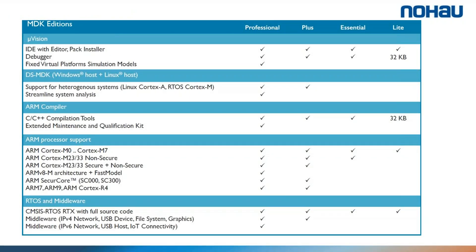There are four different editions of Keil MDK. There is a lite edition which is free of charge but limited in size — you can only debug and compile applications that are less than 32 kilobytes. Then there is the essential edition with no code limitation, and we have the plus and professional editions where you add a lot of middleware components. The ULINK+ that we will talk about today will work with all of these editions.